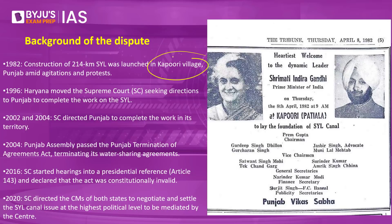As soon as construction started, there were widespread agitations and protests in Punjab, especially from farmers who feared they would not have enough water for agriculture. Construction on the Punjab side soon stopped. Haryana then approached the Supreme Court in 1996, asking it to direct Punjab to complete its portion of the link canal. The Supreme Court heard the matter and directed the Punjab government to take appropriate steps to complete the construction.